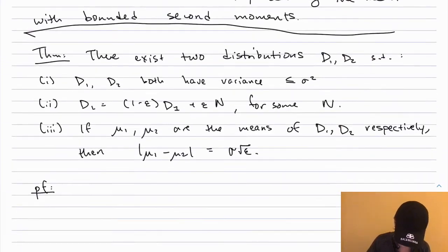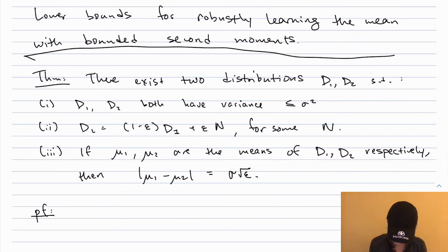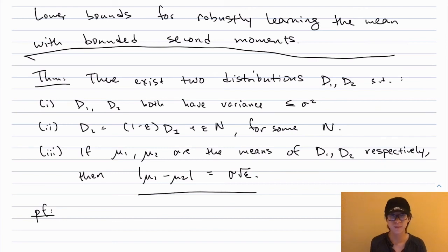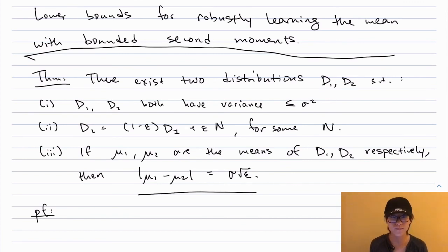Now let's conclude by proving the lower bound for robustly learning the mean under second moment assumptions. We need to show there exist two distributions D1 and D2 such that both have variance at most sigma², D2 can be written as a (1-epsilon) mixture of D1 with epsilon noise, and |mu_1 - mu_2| = root(epsilon)·sigma. By the same machinery, this implies no algorithm can distinguish epsilon-corrupted samples from D1 versus D2, so no algorithm can learn the mean to better than root(epsilon)·sigma error.